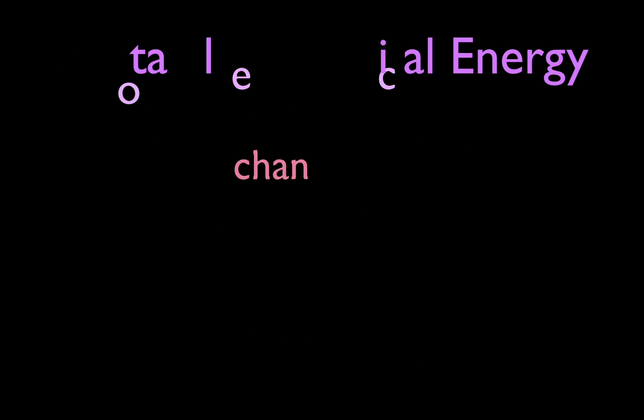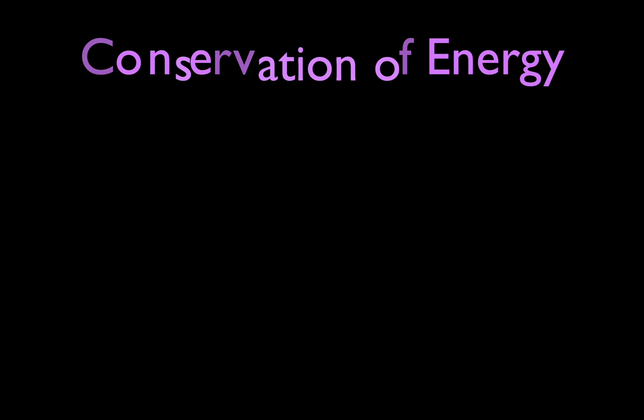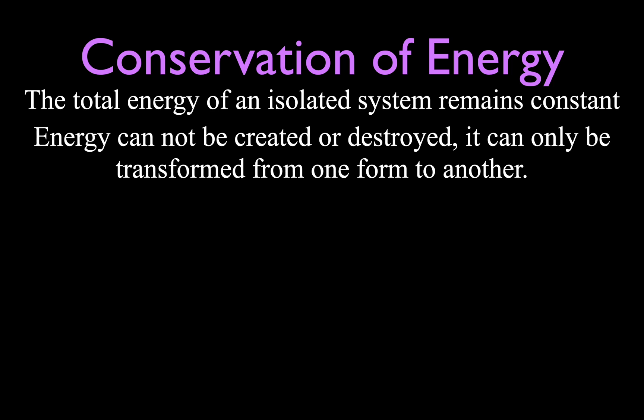We're also going to talk about total mechanical energy, which is simply adding together the kinetic and the potential energy. The unit is the joule, and I'll use the symbol TME for total mechanical energy — sometimes you see just E or ME. Conservation of energy is the fact that the total energy of an isolated system remains constant: energy cannot be created or destroyed, but it can be transformed from one form to another.